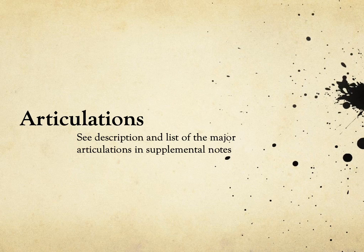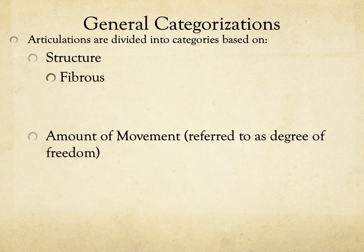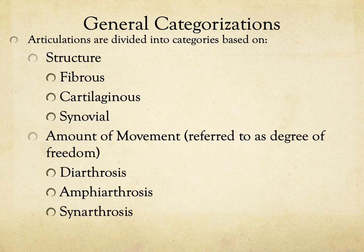There's a whole list of different types of articulations and specific articulations that you'll be responsible for within the notes. We're going to talk general classifications here, but you want to make sure you know the specific articulations for identification purposes. In general, we have two distinct ways of classifying articulations: based off of their structure, being fibrous, cartilaginous, or synovial, or based off of the amount of movement available — referred to as degrees of freedom — meaning how many axes of motion we can have.